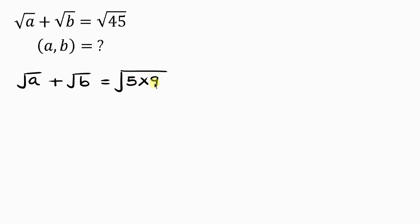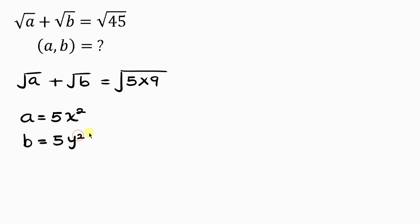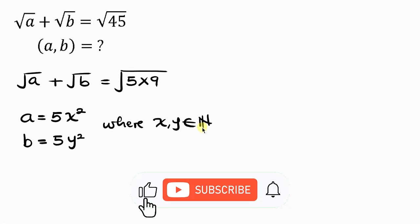Our next step will be to decompose a and b such that one of the factors will also be a perfect square. So a is equal to 5 times x squared, and b is equal to 5 times y squared, where x and y are integers.